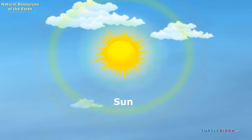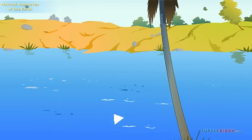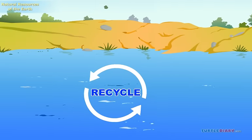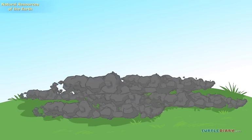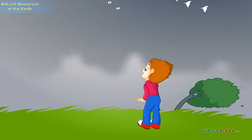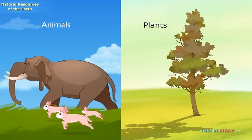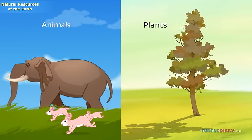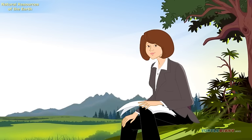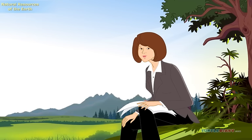For example, the sunlight will be here for many years. Water can be used many times as it gets recycled. Nature makes more rocks. Rocks break down and make more soil. More wind is also made by nature. Plants and animals also produce more of their own kind. All these resources are called renewable. Renewable resources are those natural resources which are being replaced in nature over time.